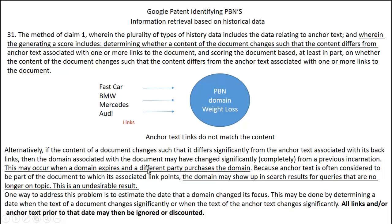The patent states this may occur when a domain expires and a different party purchases the domain. Google is saying that if this happens, it could tell them the domain has changed hands. The domain may show up in search results for queries that are no longer on topic — an undesirable result. One way to address this is to estimate the date the domain changed its focus, and all links and anchor text prior to that date may be ignored or discounted.